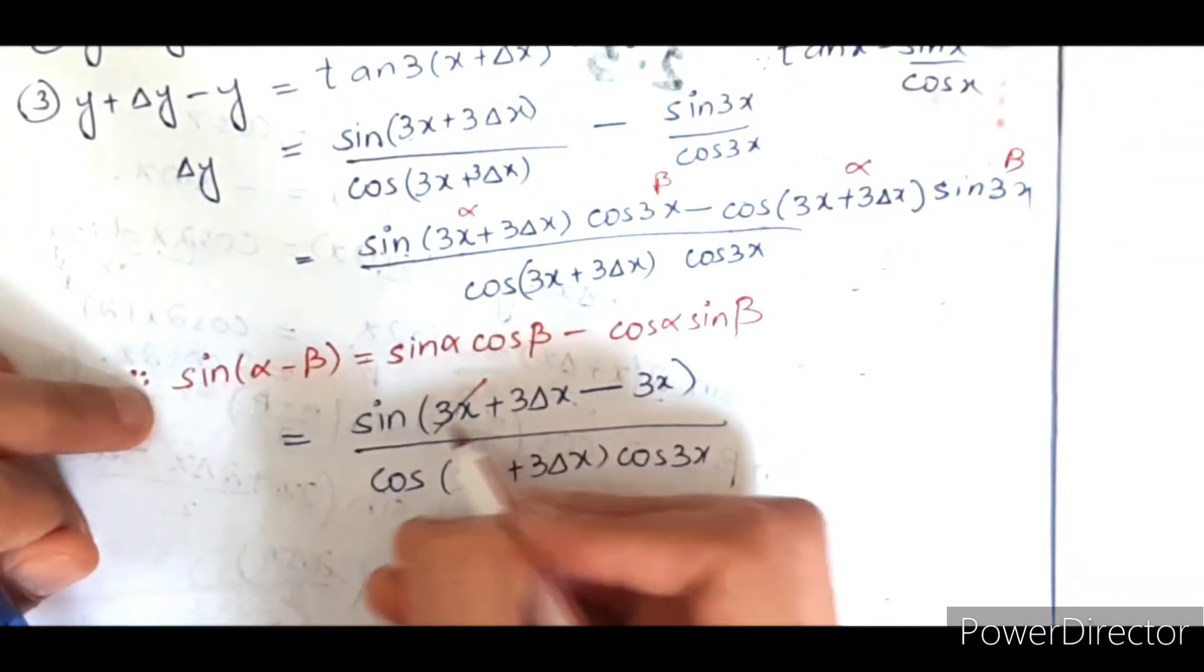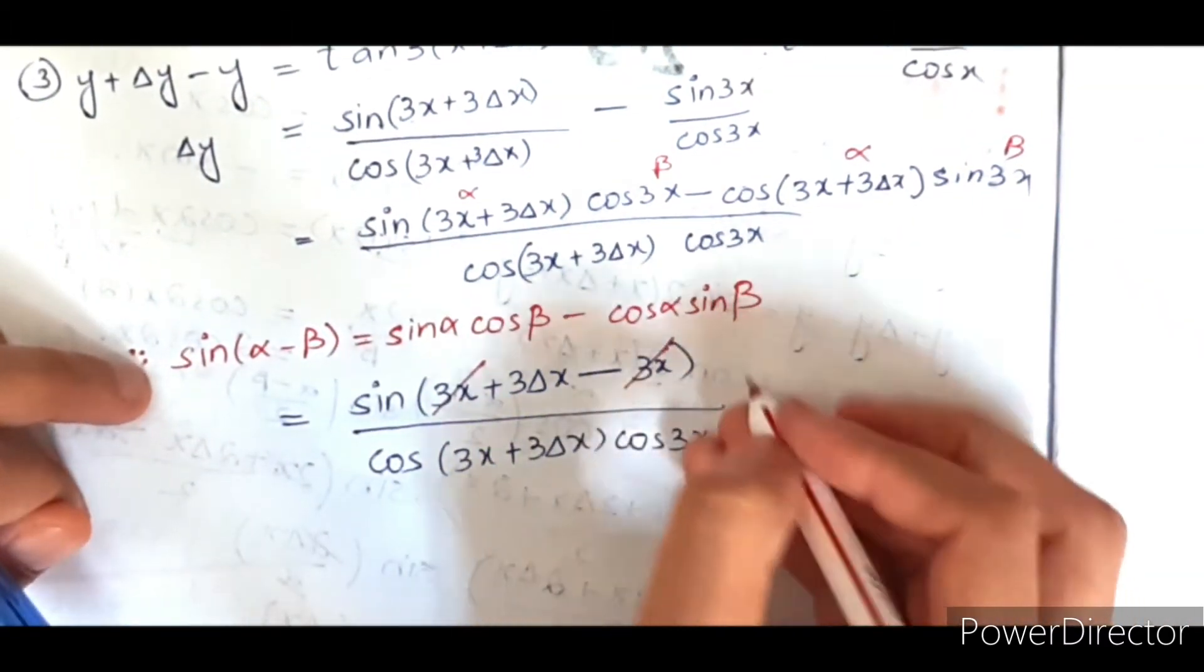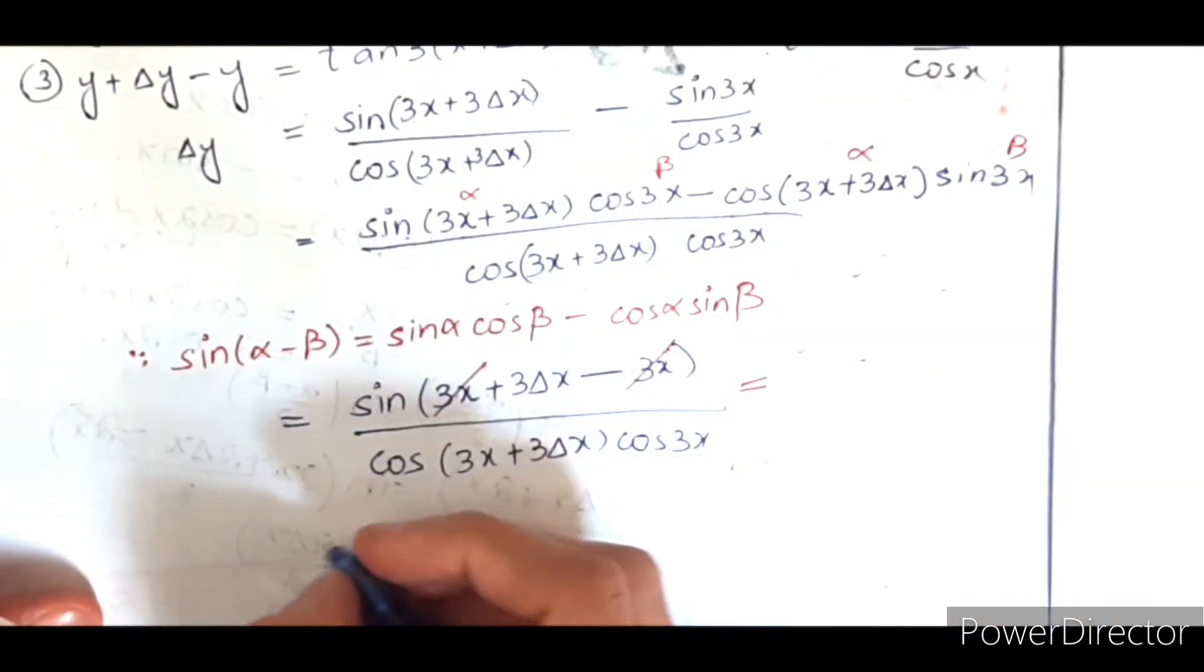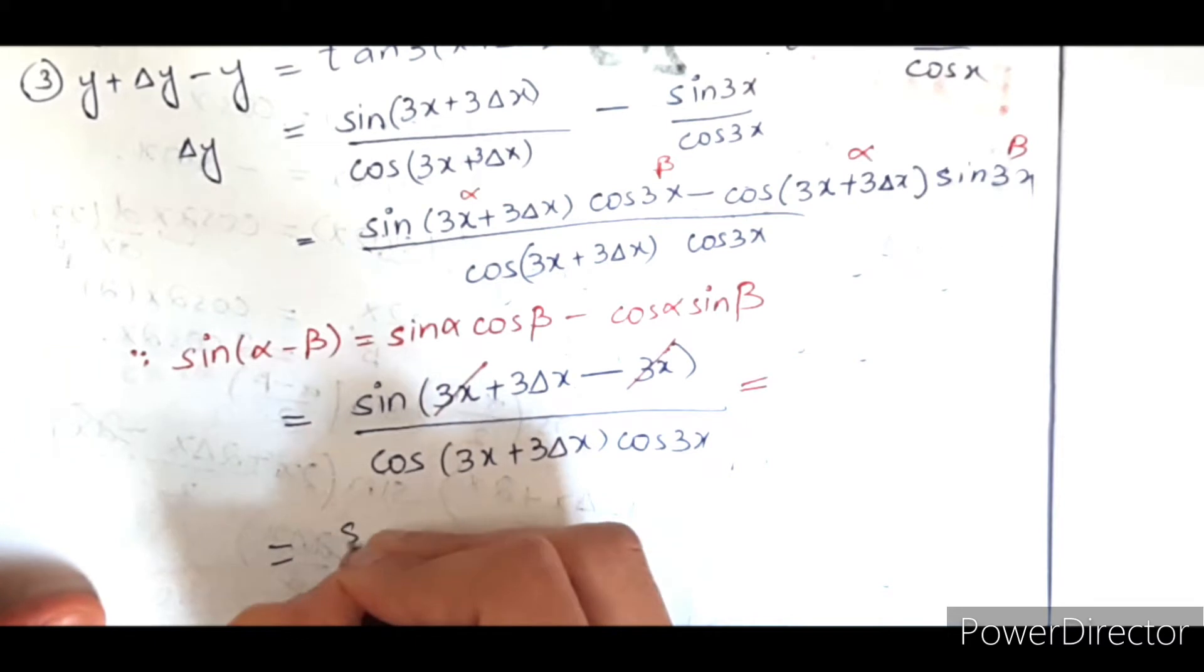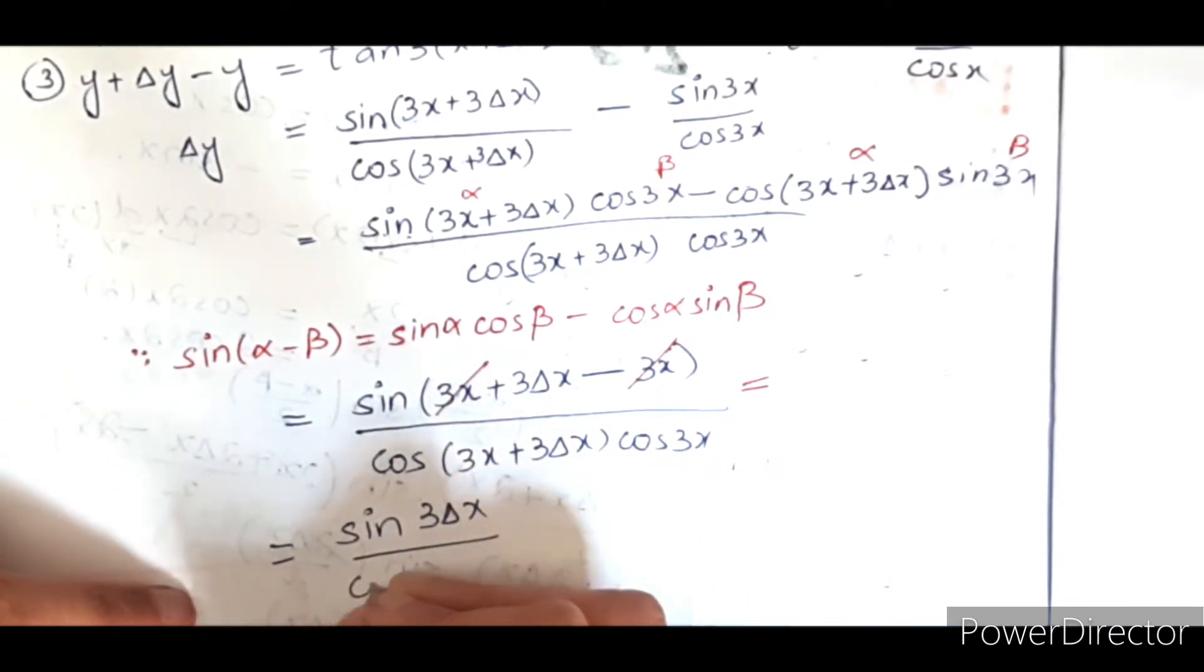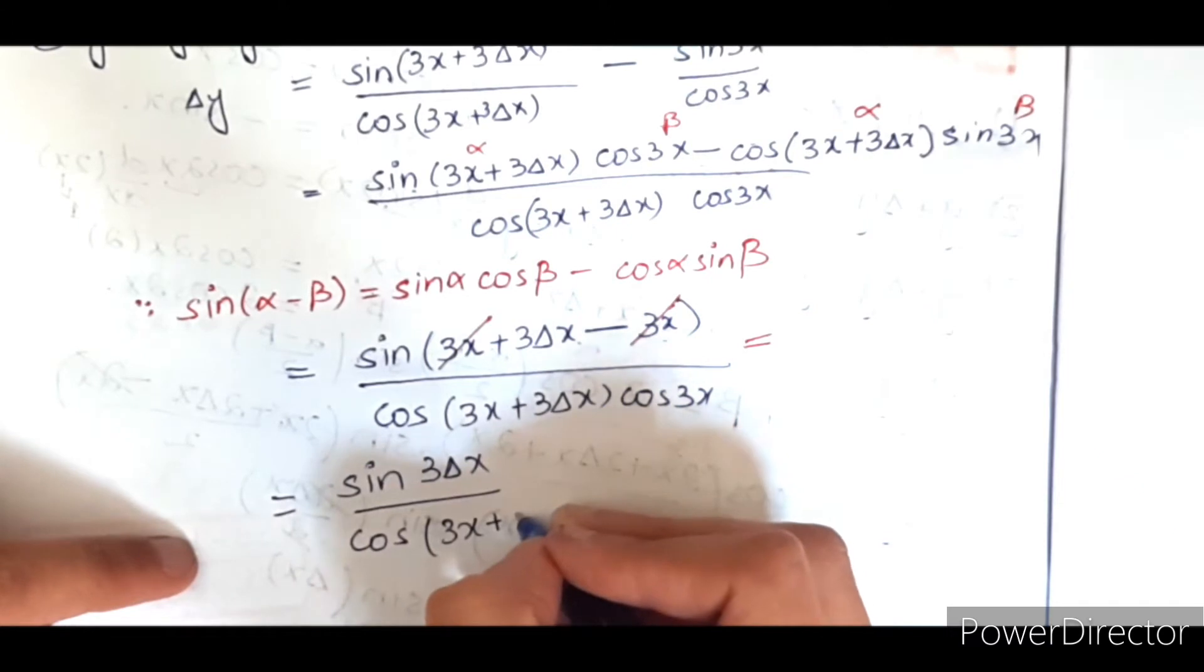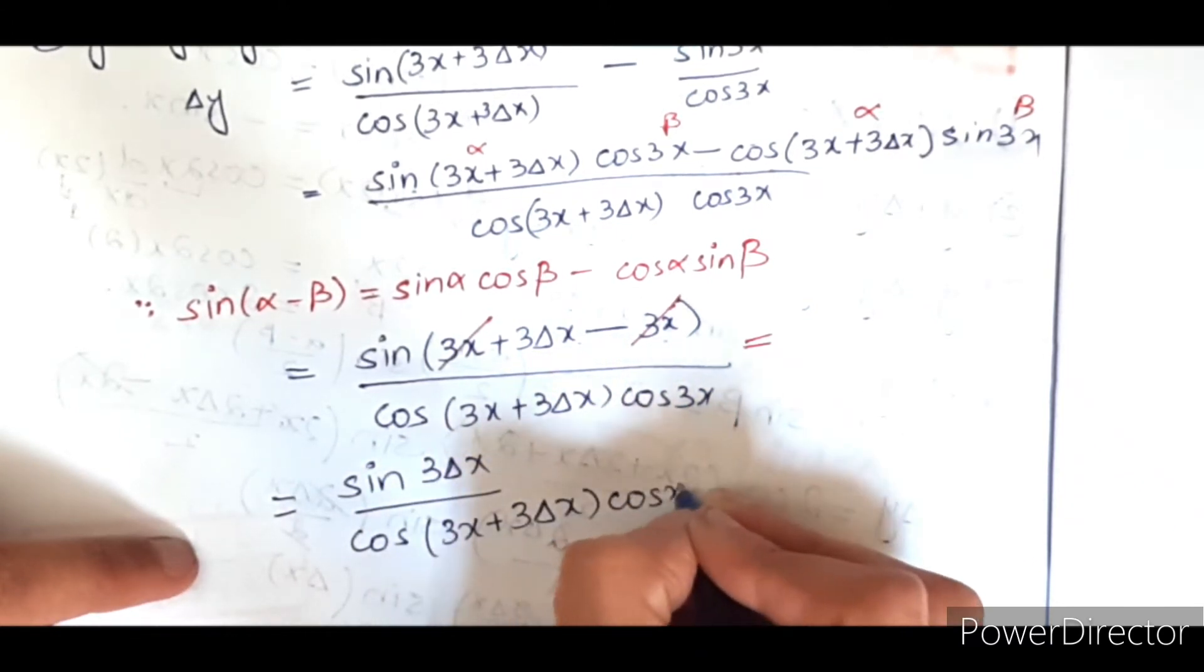Here 3x positive and negative 3x are going to cancel out, so we are left with only sin 3 del x divided by cos 3x plus 3 del x into cos 3x.